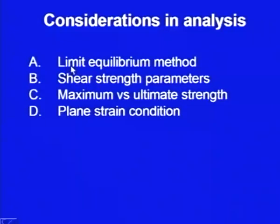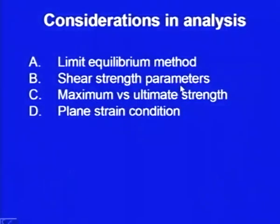We discussed about the limit equilibrium method, which means we consider a potential failure plane and on that potential failure plane, we find out what are the mobilized shearing stresses and what are the available shearing strength. The ratio of the shearing strength and the mobilized shearing resistance gives the factor of safety. Then we discussed about the shear strength parameters, the Mohr-Coulomb parameters C and phi.